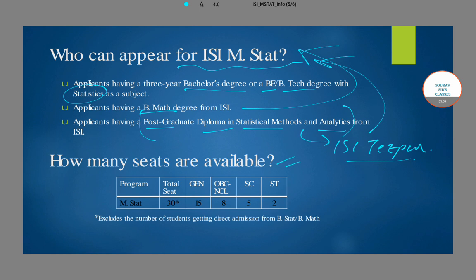The MSTAT program is offered at the Kolkata campus with 30 seats in total, of which 15 are for the general category, 8 for OBC and CL students, 5 for SC students, and 2 seats are earmarked for ST students. These 30 seats are exclusive of additional seats available for ISI BSTAT and BMATH students, who get direct admission to the program without any examination.